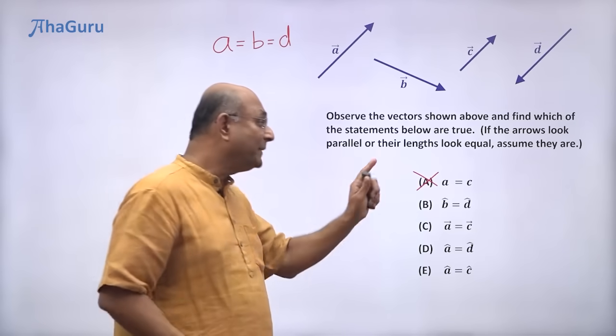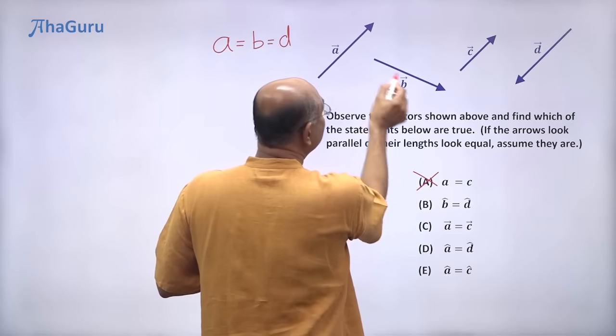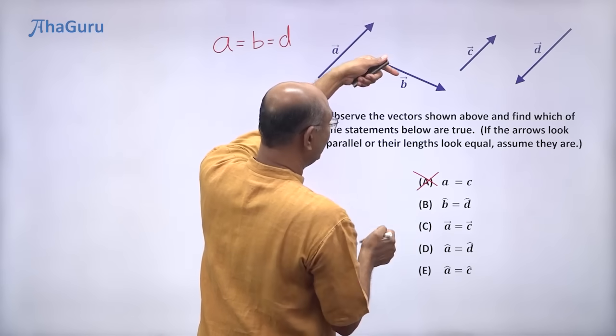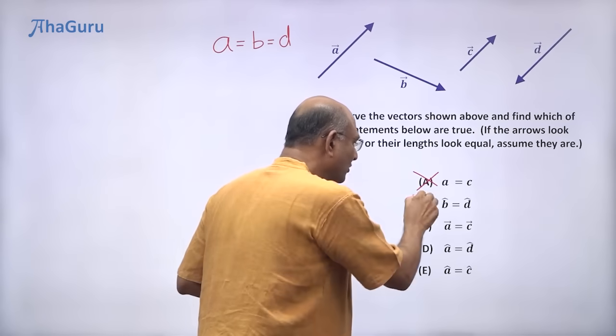What is the second option telling us? B cap is equal to D cap. What is B cap? It is the direction of this vector is equal to the direction of that vector. No, clearly that is also wrong.